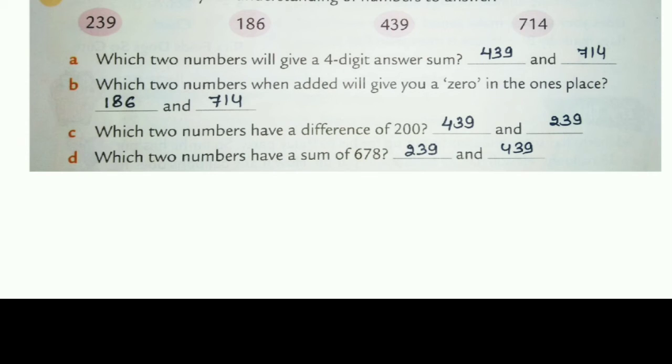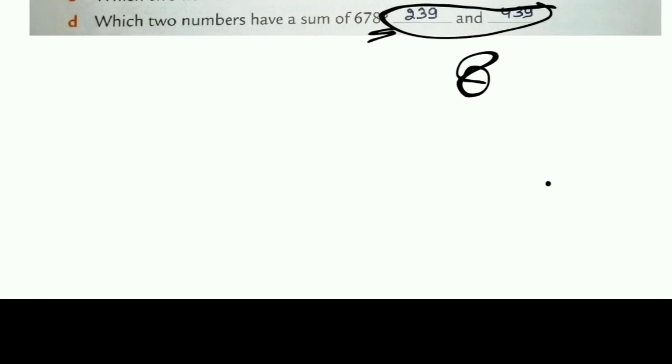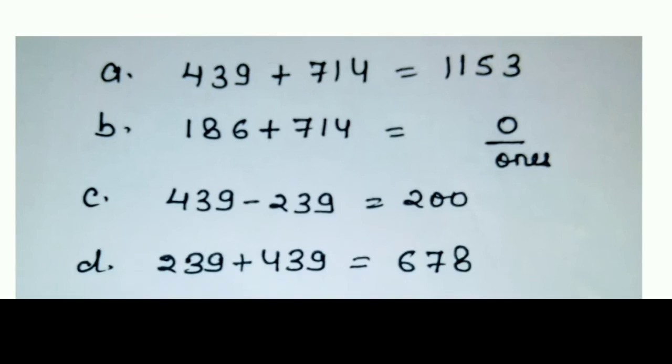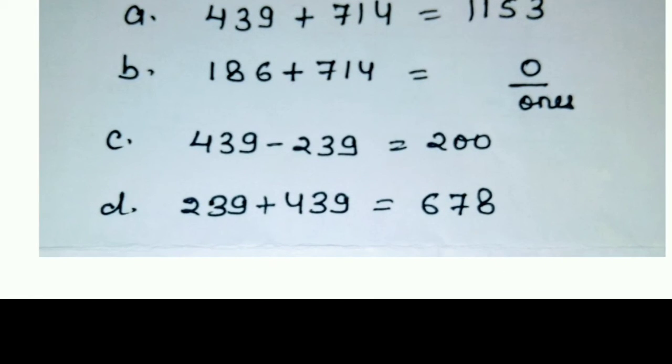Next, which two numbers have a sum of 678? It means last place value, it means ones place value, we want 8. So when 8 will come, when we add 9 and 9, 9 and 9 means 18 will come. So 18 means this 8 will come, then rest answer will come. So we will add these two numbers, we get 678. See, I have done here. So like this you can note it down in your copy.